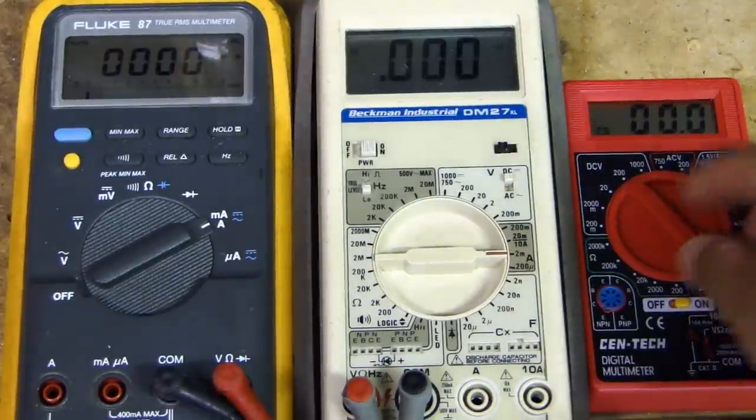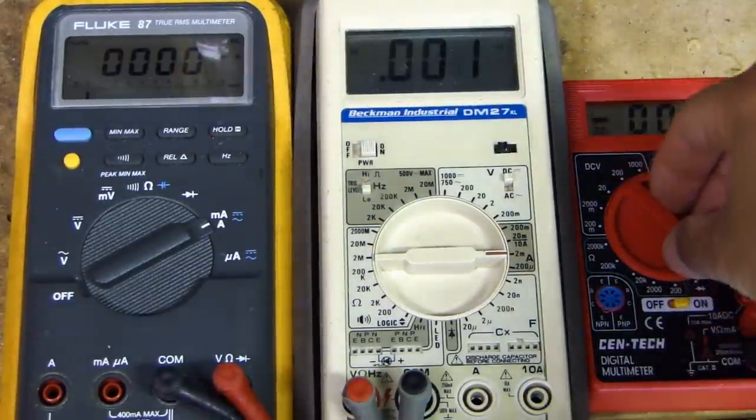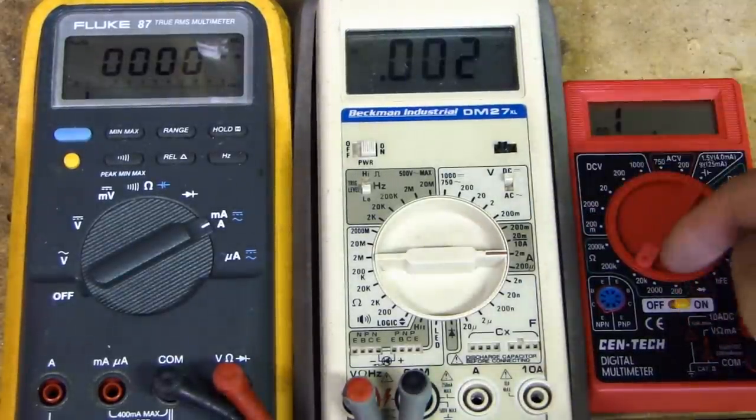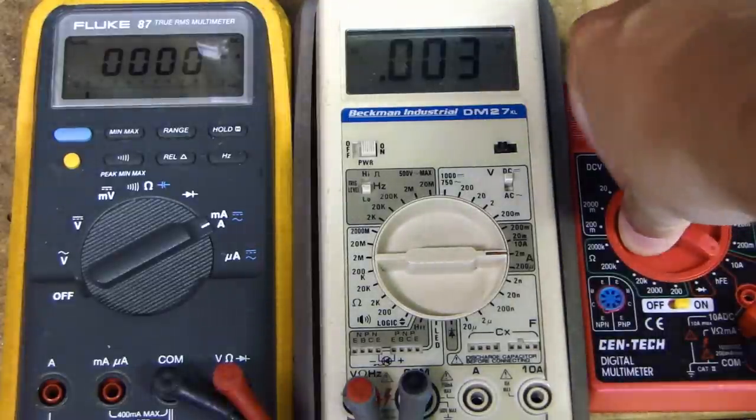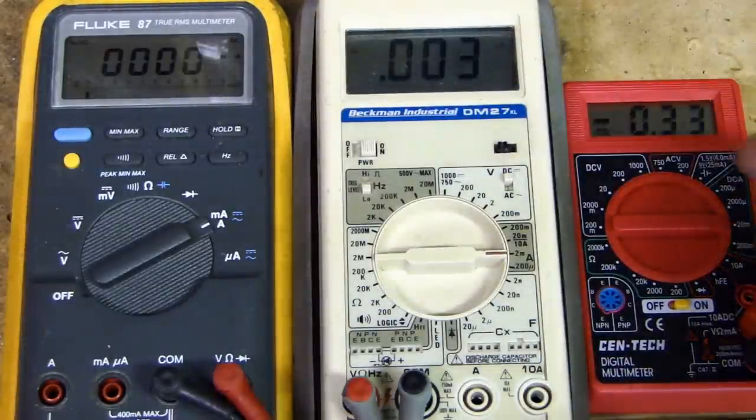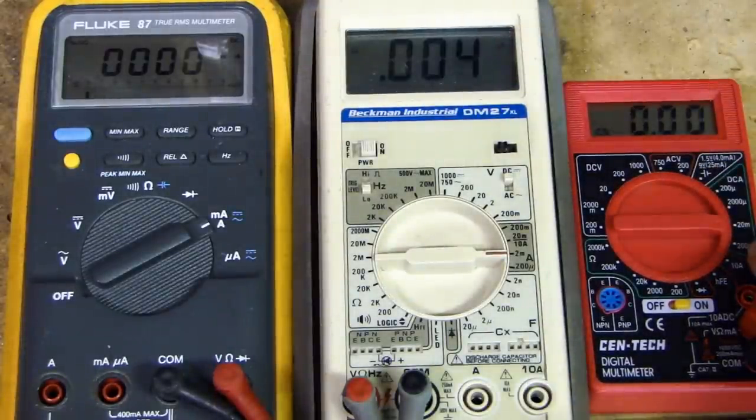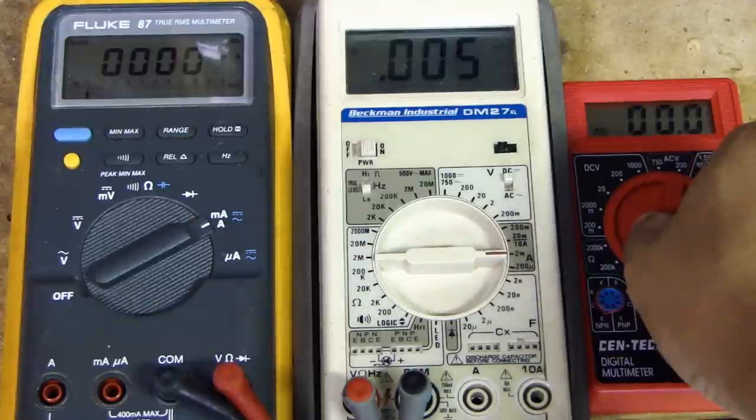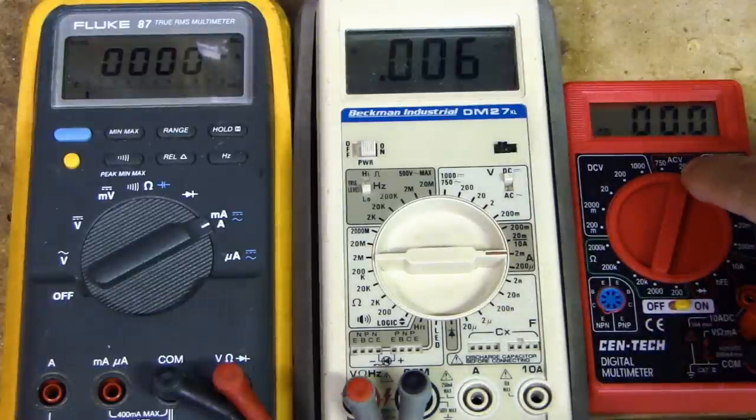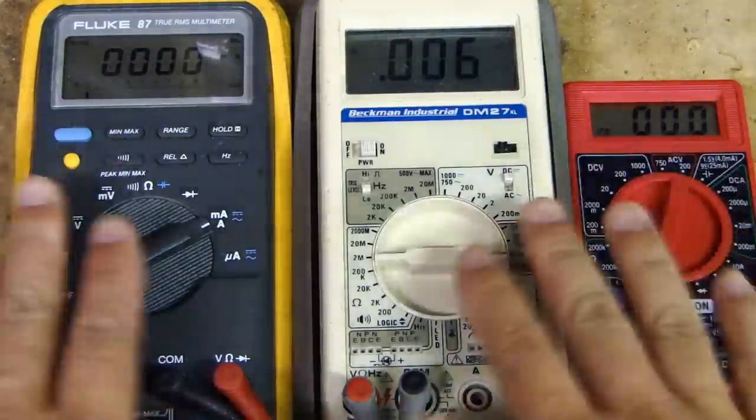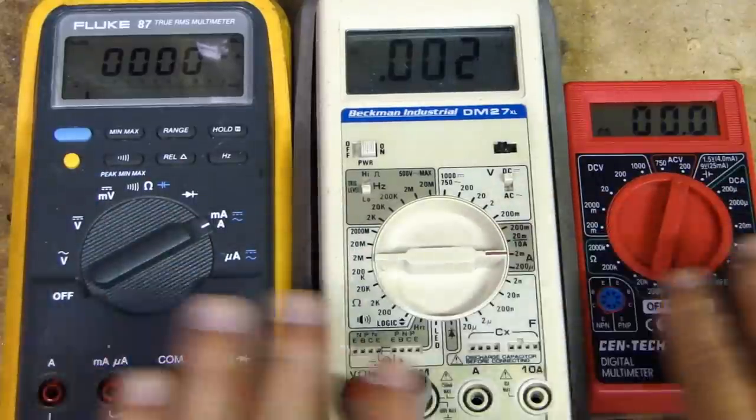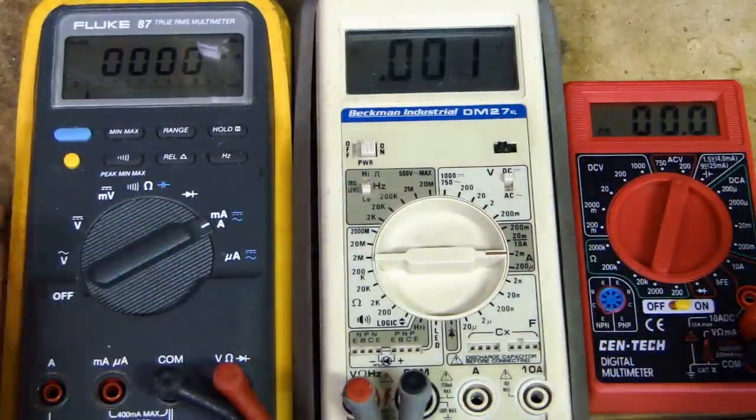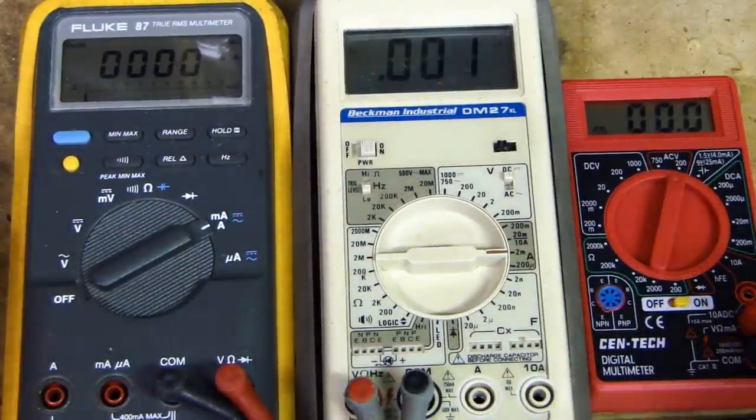And on this one here, this section is DC. This section is ohm resistance. Over here is DC amp current. Up here is AC voltage. So even though the layout is different between different manufacturers, the functionality, as you can see, are all very similar.